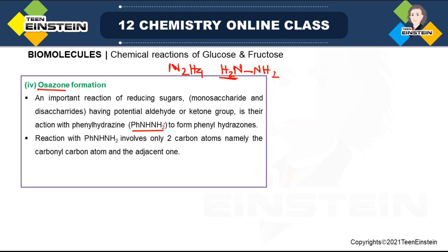Reducing sugars can be monosaccharides or disaccharides. Monosaccharides cannot be further hydrolyzed, but disaccharides yield two monosaccharides on hydrolysis. Both mono- and disaccharides can give this reaction, but they must be reducing in nature. There must be an aldehyde or ketone group present, as that is the reactive part of the molecule.